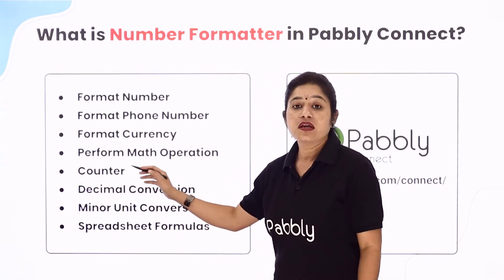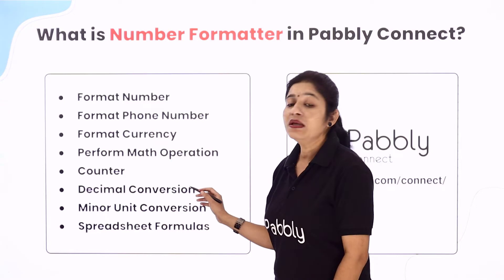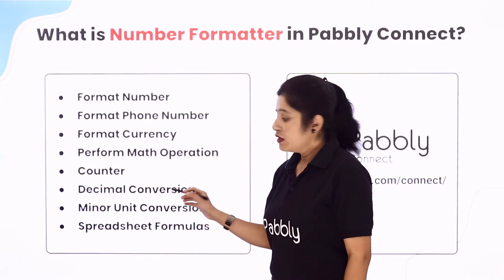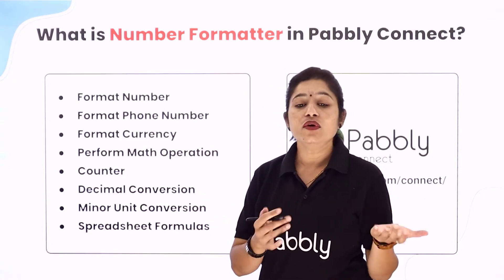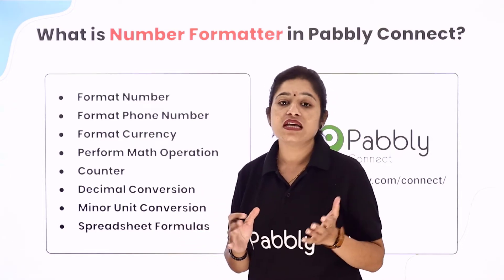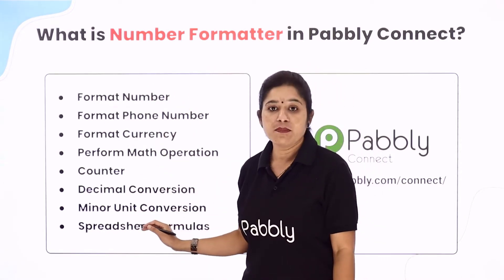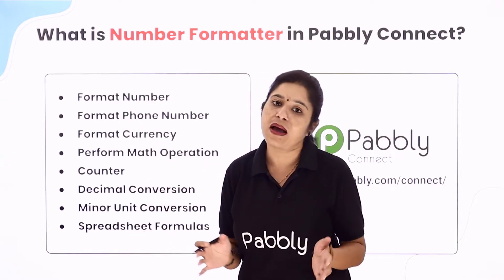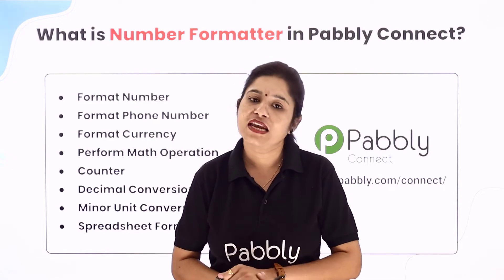Then we have the counter option, by which you can decrement or increment numbers. We also have decimal conversion, where you can add decimals to numbers in your workflow. Then there is minor unit conversion, which converts a currency into its minor unit. And finally we have spreadsheet formulas — a list of formulas that can be used to format a number as per your requirement. All these are the features of number formatter by Pabbly Connect.